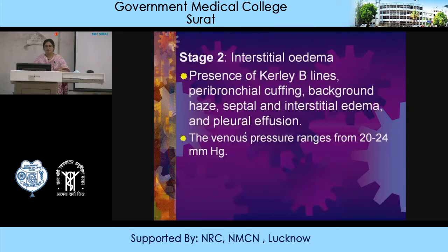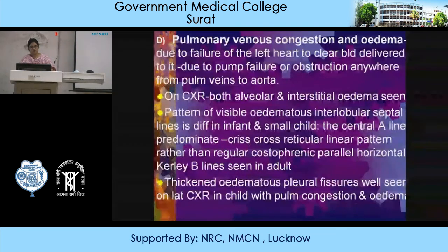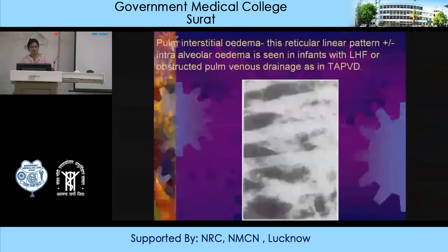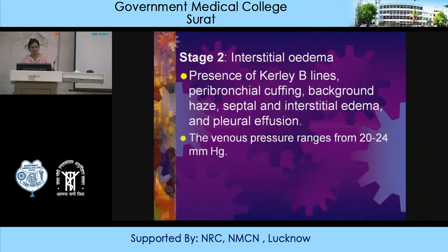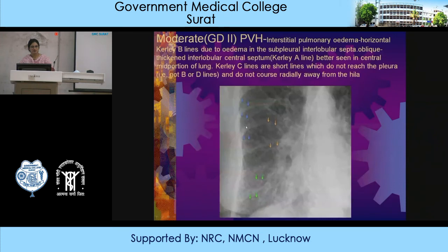Thickened edematous pleural fissures are well seen on the lateral chest X-ray. In grade 1 mild PVH, there is cephalization of blood flow with increased caliber of upper lobe vessels. In grade 2 (interstitial edema), Kerley B lines are present, and also Kerley A lines — short lines which do not reach the pleura and do not course radially away from the hilum.